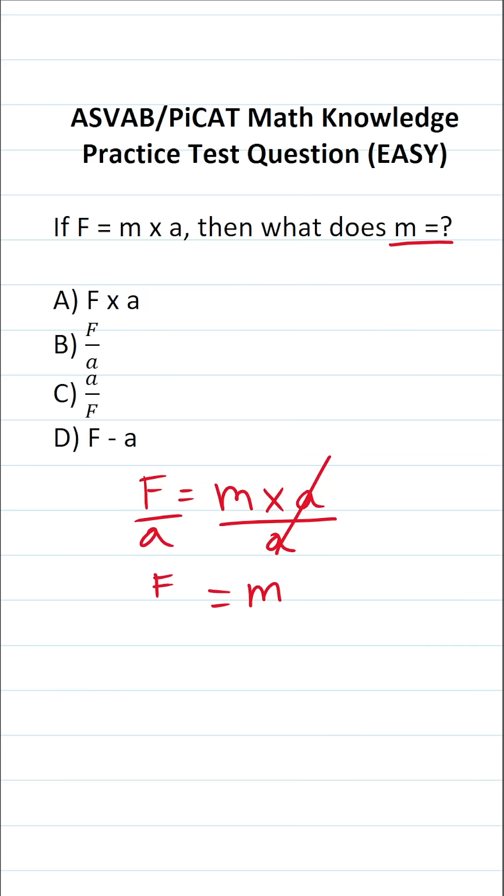You can see M is equal to F over A. And if you want, you could rewrite it like this: M equals F over A. So the answer to this one is F over A, which is B, of course.